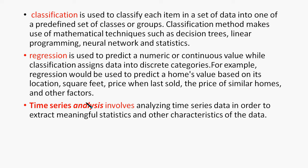For regression, we have a numeric value or continuous value. For example, we have a house with square feet, price, and location — and we predict the price. That is the output of regression.